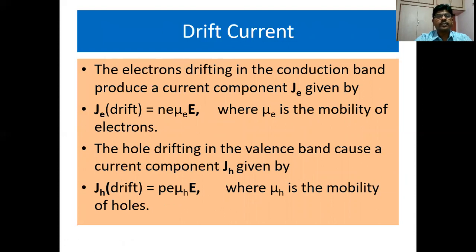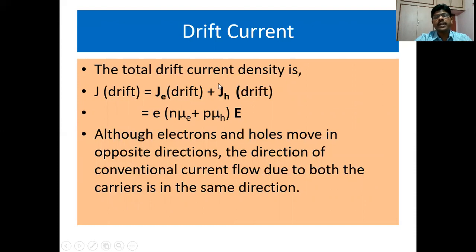The electrons drifting in the conduction band produce a current component J_e drift, given by J_e(drift) = eN·μ_e·E, where μ_e is the mobility of electrons. Likewise, the holes drifting in the valence band cause a current component J_h drift, given by J_h(drift) = eP·μ_h·E. Although electrons and holes move in opposite directions, the direction of conventional current flow due to both carriers is in the same direction.